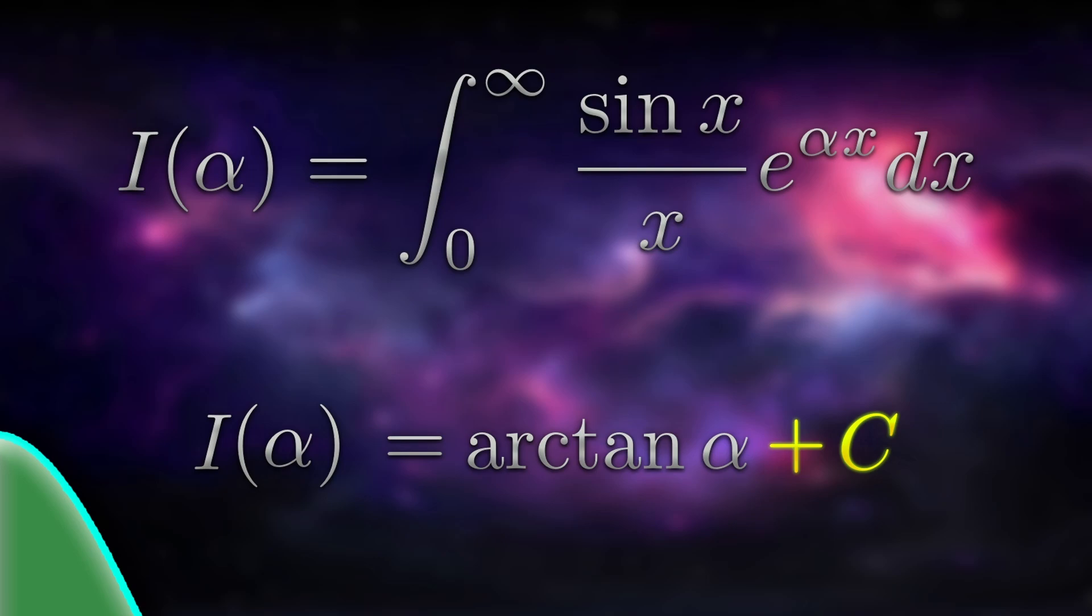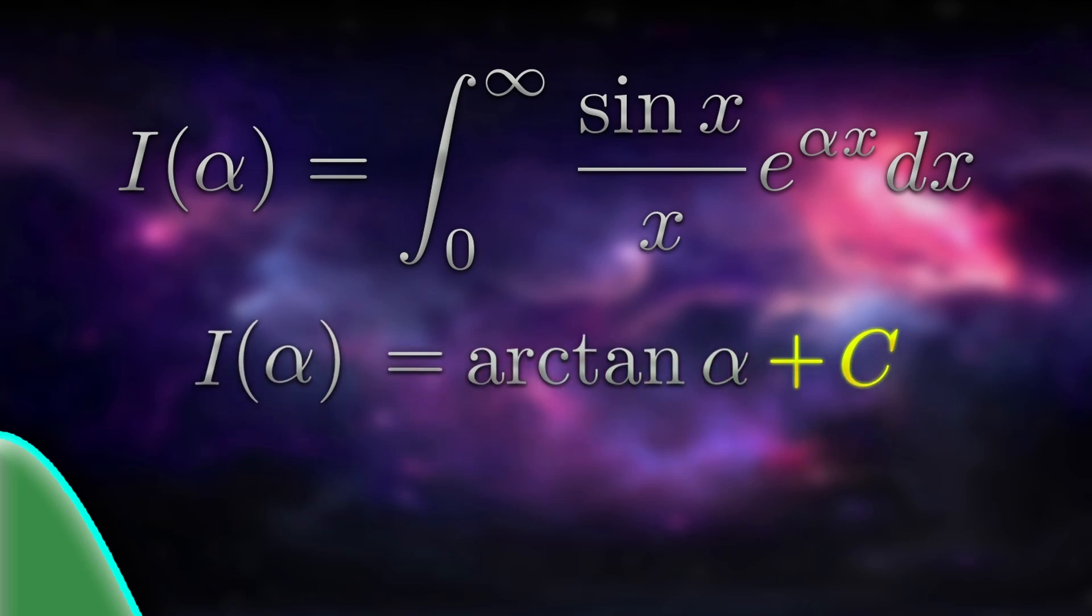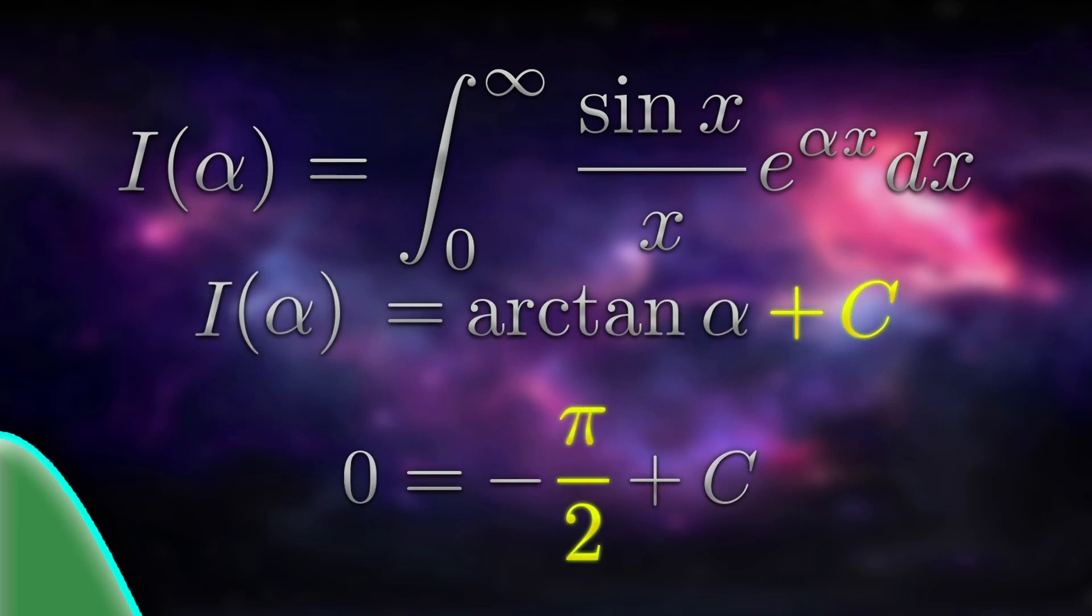We want to work out what this constant c is. To do this, we need to evaluate the function i of alpha at some value of alpha. Any value of alpha will do. Unfortunately, there's no value of alpha for which we know how to do this integral. We seem to be out of luck. Usually, what we would do is, if possible, choose a value of alpha so that the whole thing becomes zero. We can't do that here because e to the alpha x won't be zero for any alpha. However, as alpha goes to negative infinity, which is okay because we said that alpha is negative, then e to the alpha x will go to zero, since x is positive because the integral has bound zero to infinity. The limit as alpha goes to negative infinity of i of alpha is therefore zero. If I take this limit on both sides of the bottom equation, i of alpha goes to zero, and arctan of alpha goes to negative pi over two. We rearrange the bottom equation to find that c equals pi over two.